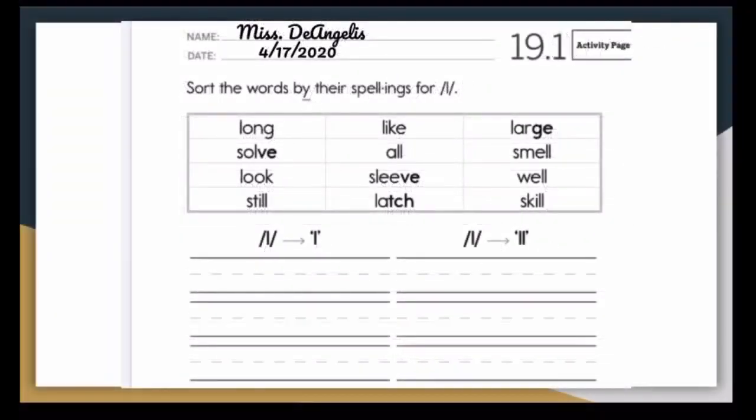Now you're going to open up to this page. Make sure you write your name and date just like I did. Let's go through our word bank. We have long, solve, look, still, like, all, sleeve, latch, large, smell, well, and skill. We have to organize these words by their spellings. Let's take a look. If you need to pause the video to write, do so. Make sure your handwriting is very neat and there's no floating letters, meaning that your letters are written on the lines. Right. Solve. Where does long go? In the first column with the L or the second column with two Ls?